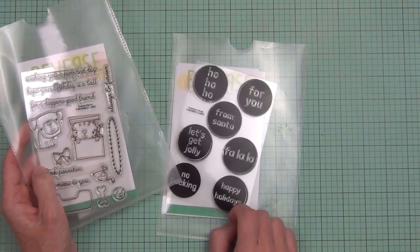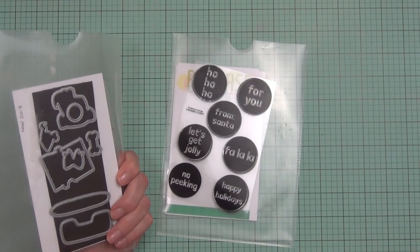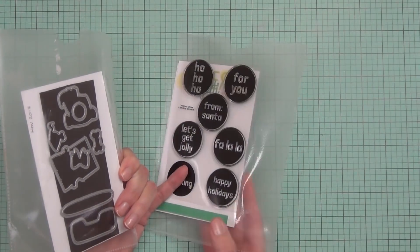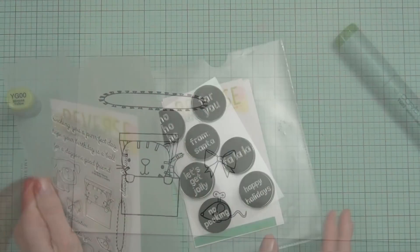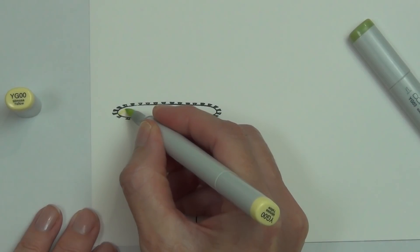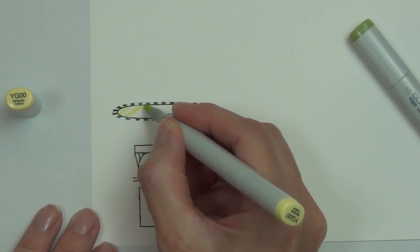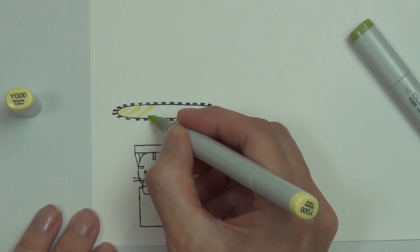I've got this Forever Friends stamp set and the Christmas Circles stamp set with their coordinating dies. I'm going to make a Christmas card even though this is a birthday stamp set with the pussycat. I thought it would make a really sweet Christmas card.